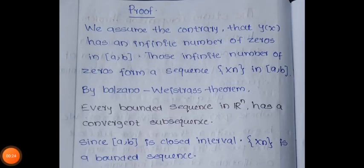Proof. We assume the contrary — that y(x) has an infinite number of zeros in [a, b]. We have to show that y(x) has a finite number of zeros. So by using the contradiction method, we assume y(x) has an infinite number of zeros in [a, b].